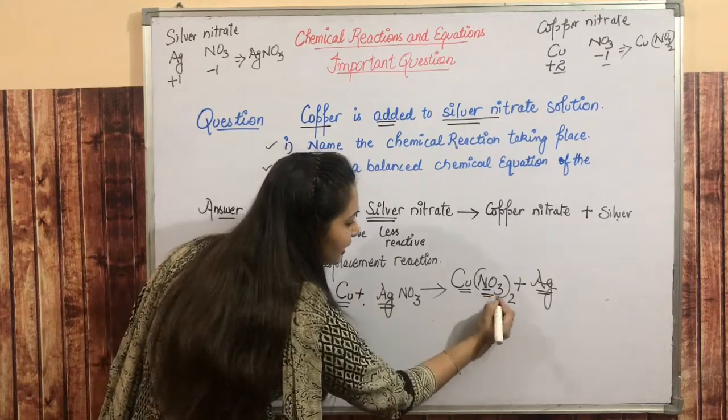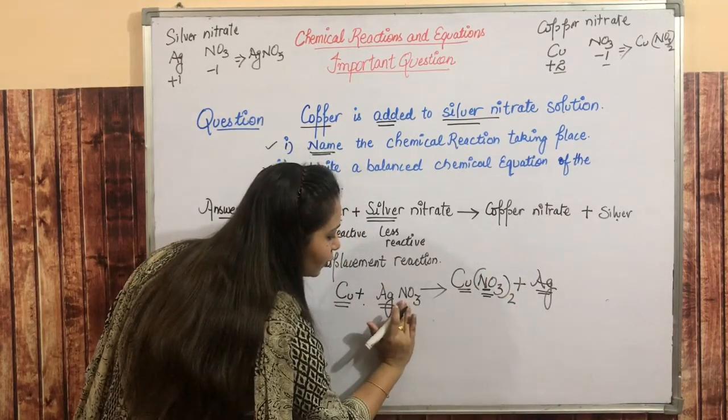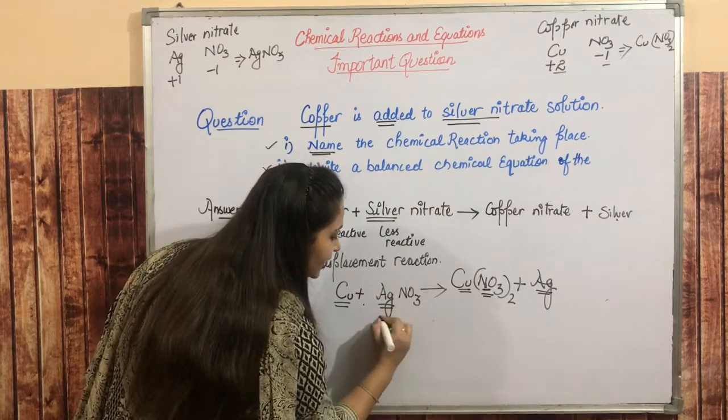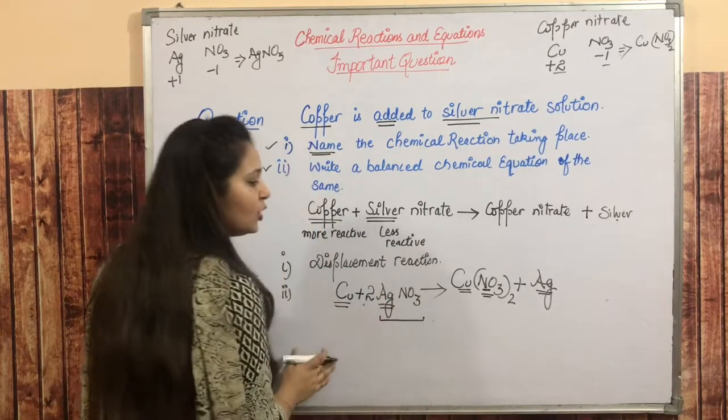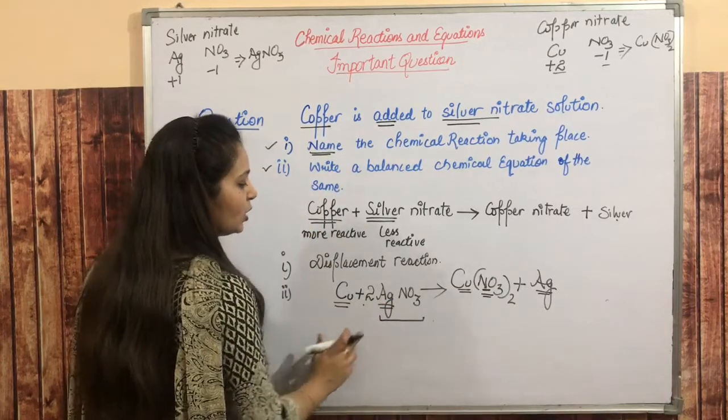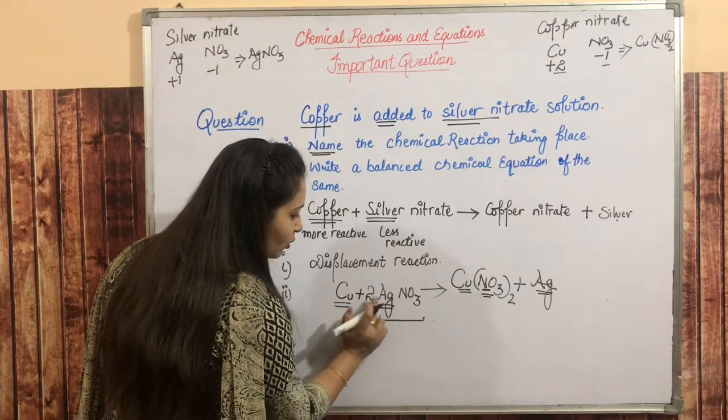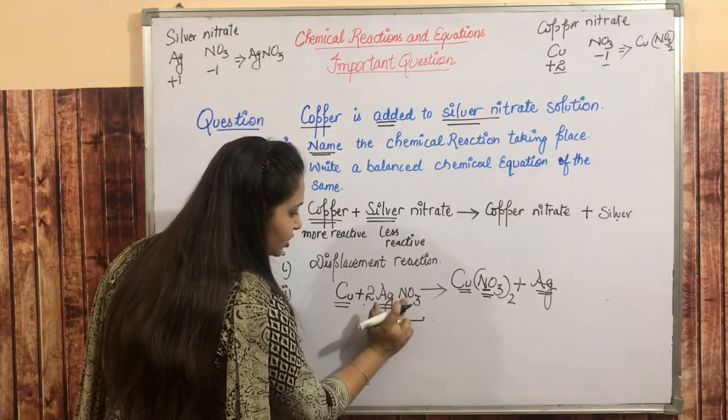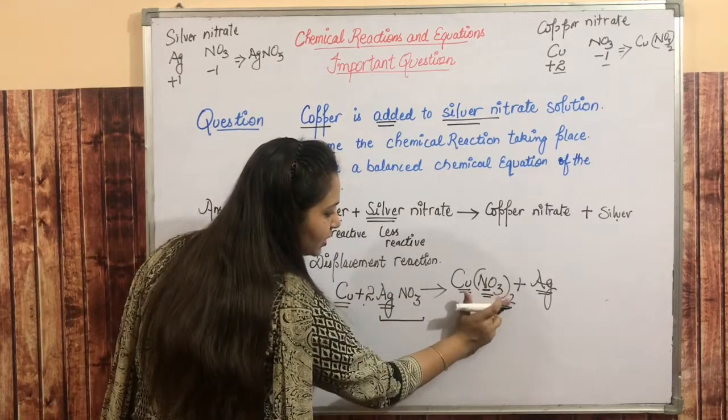So balancing, what will we do here? NO3 whole group is two, but NO3 group is two. Right, so here NO3 here two—nitrogen and three times two equals six oxygen; two nitrogen, six oxygen.